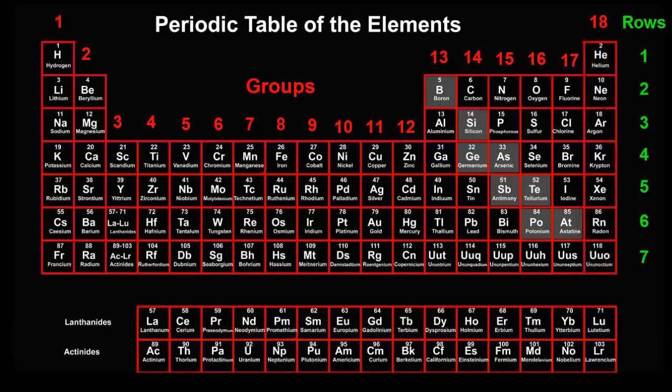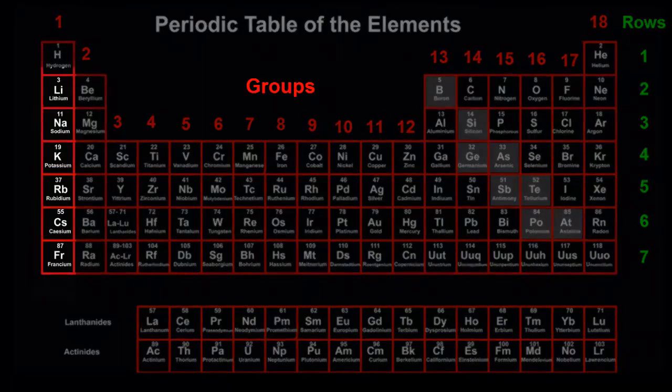The key point about groups is that they contain elements that are similar to each other, like members of a family. For example, all of group 1 elements, except hydrogen, are soft, malleable metals that explode when you put them into water.